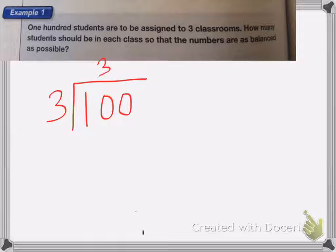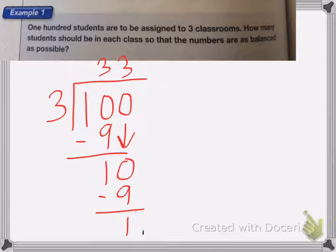Three goes into 10 three times, that's nine, subtract it, one left over, bring down my zero. Three goes into 10 three times, that's nine, subtract it, I have one left over. Now I could write this as 33.333, or I could write it as 33 and one third, but I can't have a fraction or a decimal of a student. So in this case, I'm going to write it as remainder one, because I have one student left over.